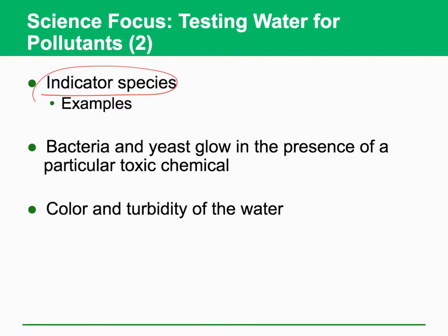Bacteria and yeast glow in the presence of particular toxic chemicals. This is another way to measure the level of toxins in the water — we can use specific bacteria or microorganisms, and by measuring some fluorescence light, we can actually quantify the level of toxin concentration in the water. Color and turbidity are general indicators to measure water quality.